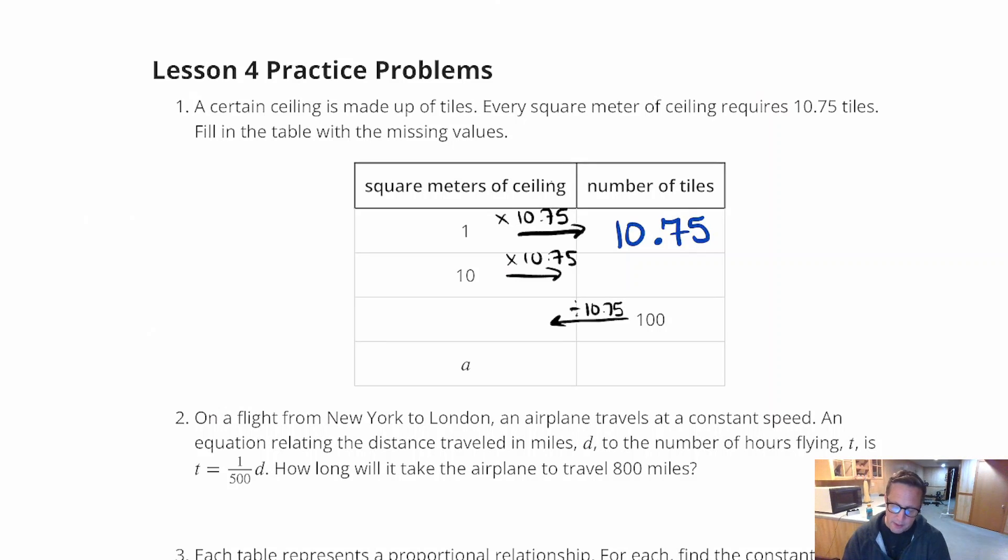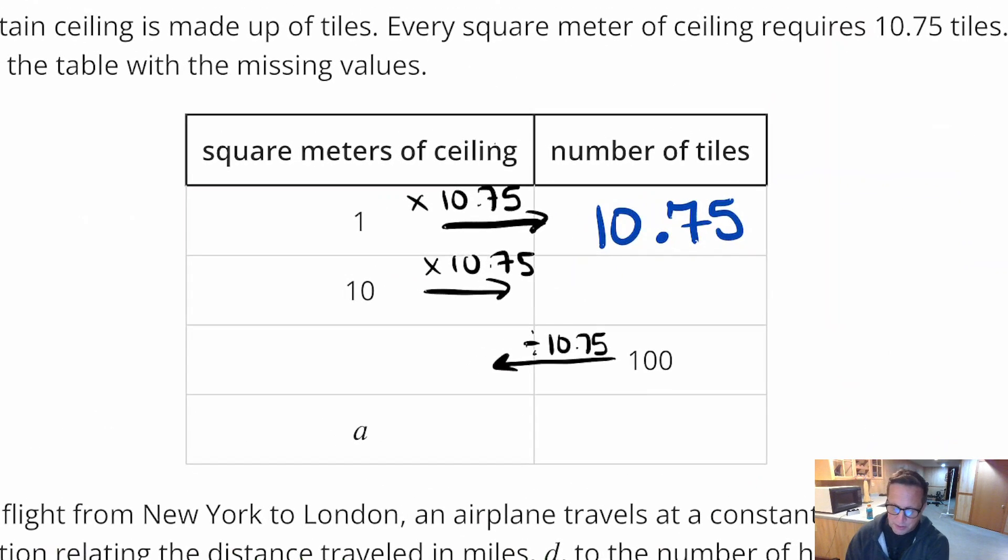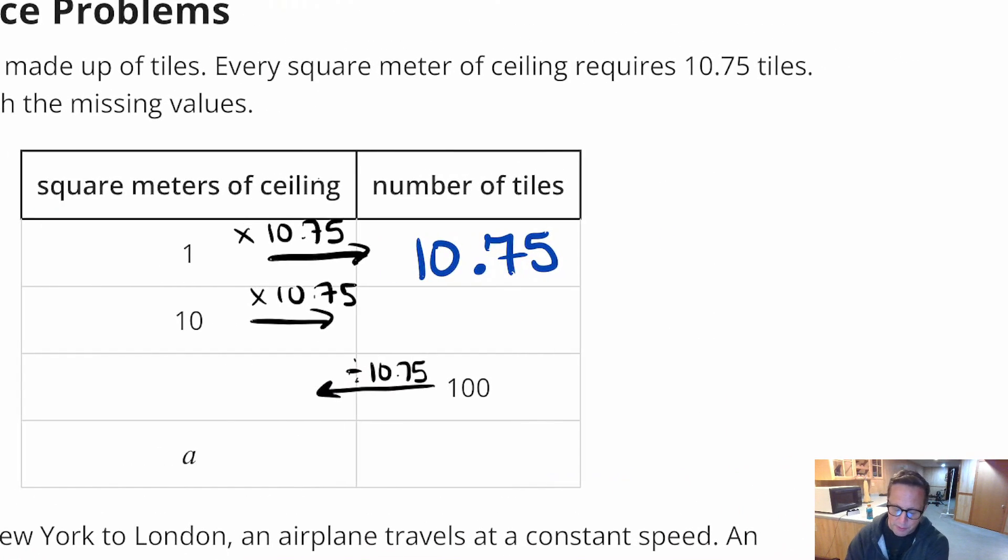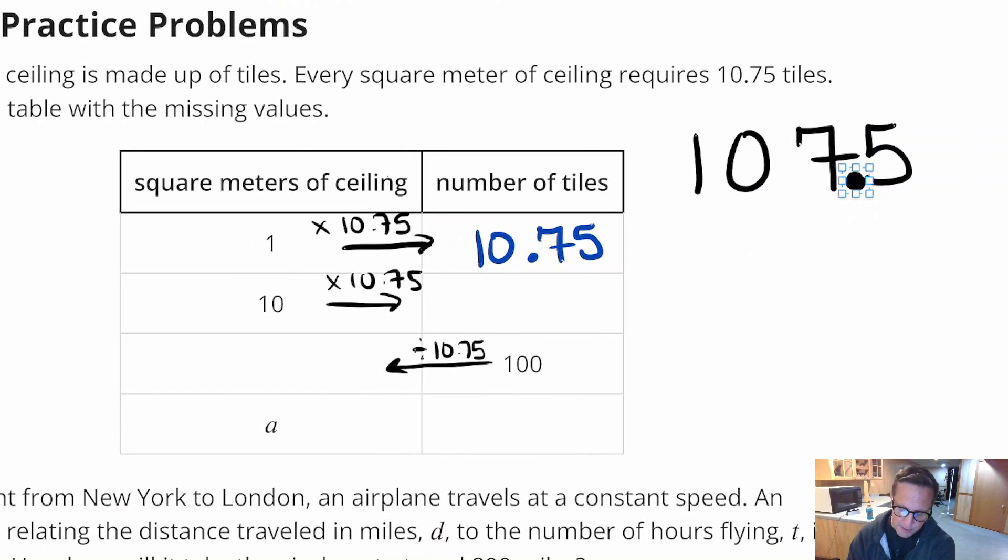And then 10 times 10.75. That's easy. If you're just multiplying by 10, it's always worth it to talk about this. You're multiplying by a power of 10. 10.75, I'm going to put the decimal down here. But we're multiplying by a power of 10. The decimal moves over one place. Right there. That's it. If we multiply by 100, it would move over 2. If we divided by 10, it would move over to the left. But we're multiplying by 10. Boom. There it is. 107.5 tiles.